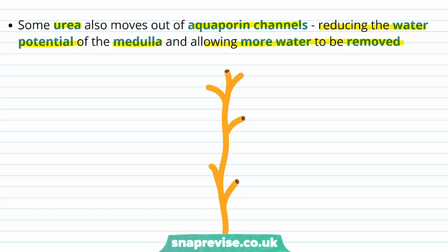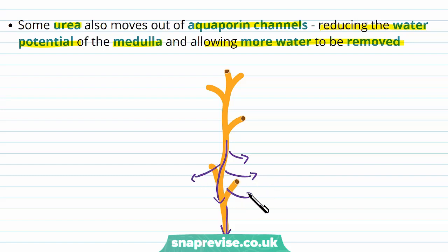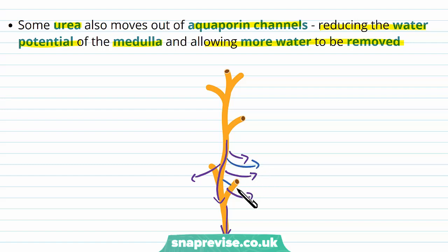Most of the urea will end up going through the filtrate and being excreted, but when aquaporin channels have been recruited via ADH, some urea is released to the medulla. This isn't because we want to keep the urea — it's just a consequence of this channel being permeable to it — but it actually helps water leave because it reduces the water potential.